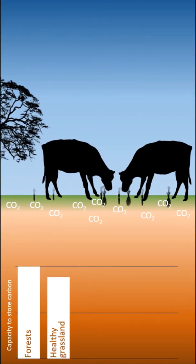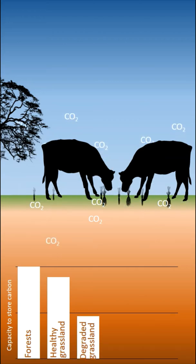When grasslands are degraded through overgrazing or desertification, they lose up to 50% of their soil organic carbon.